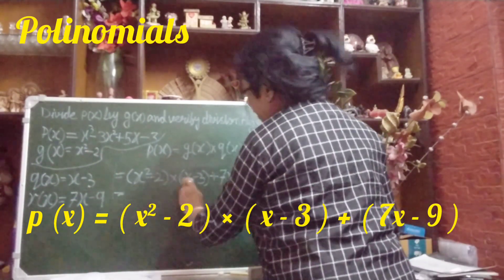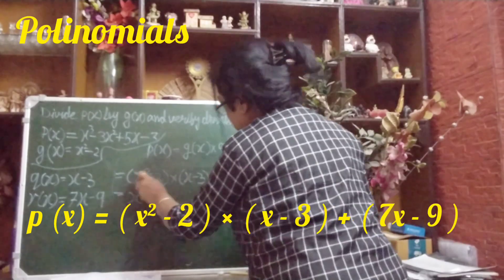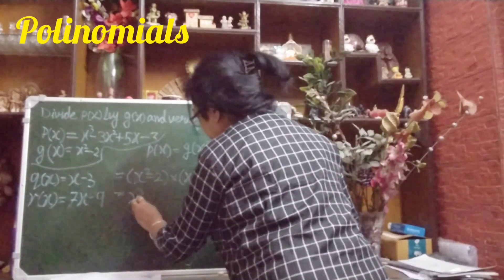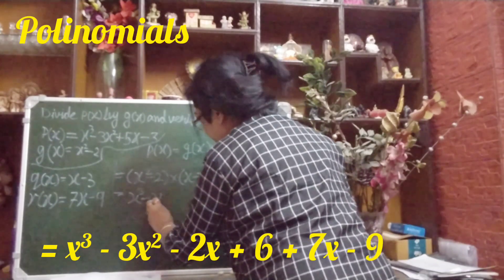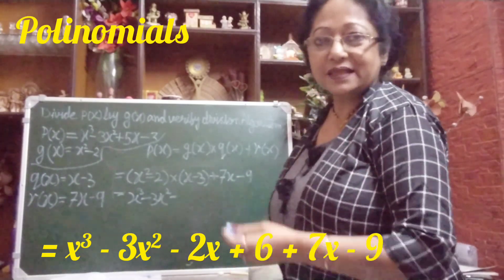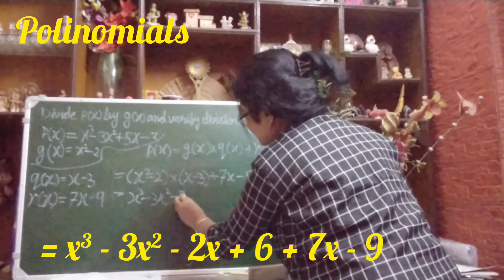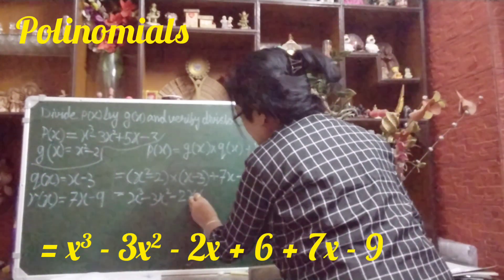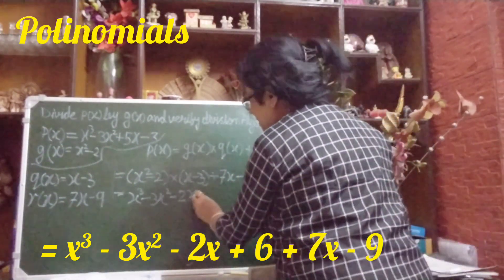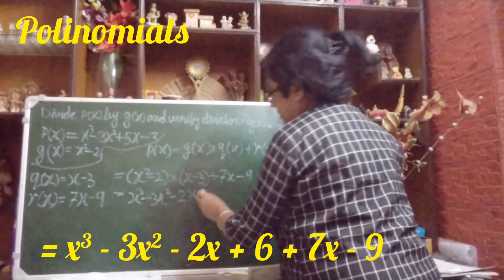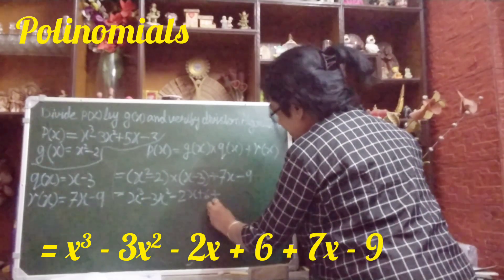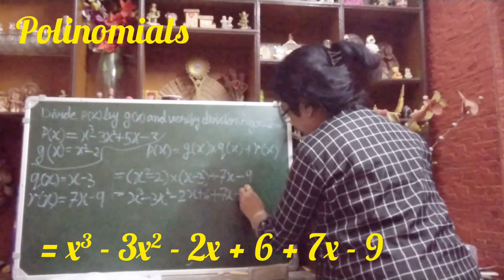Multiplying out: x² × x = x³, x² × (−3) = −3x², (−2) × x = −2x, and (−2) × (−3) = +6. So we get x³ − 3x² − 2x + 6, and then add 7x − 9.